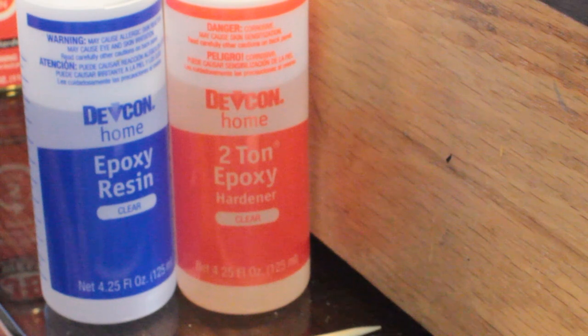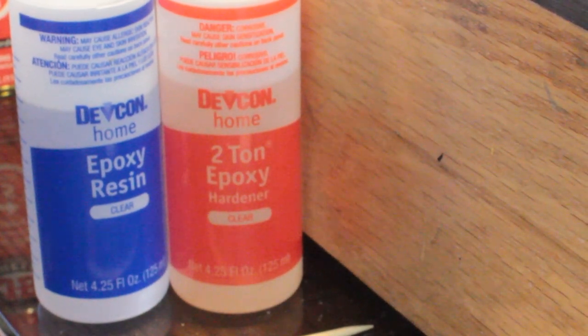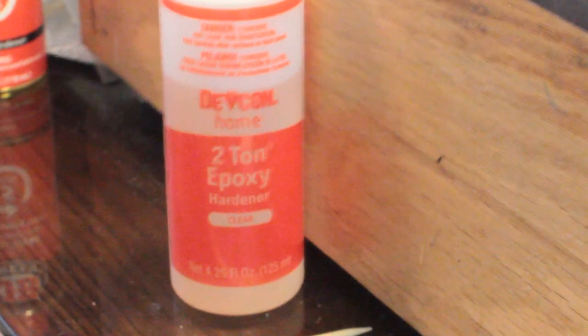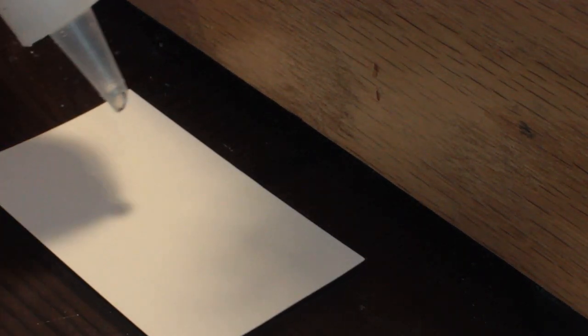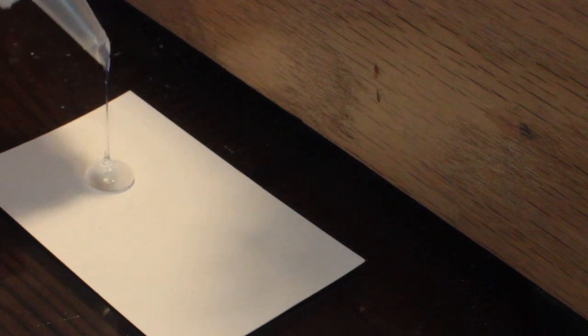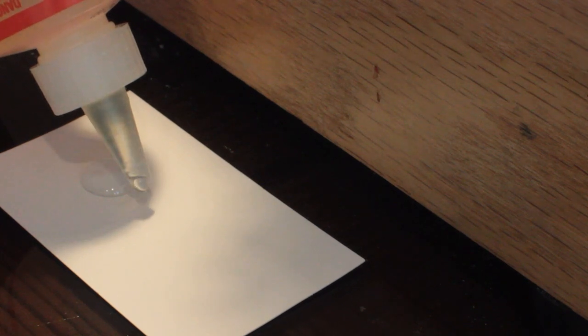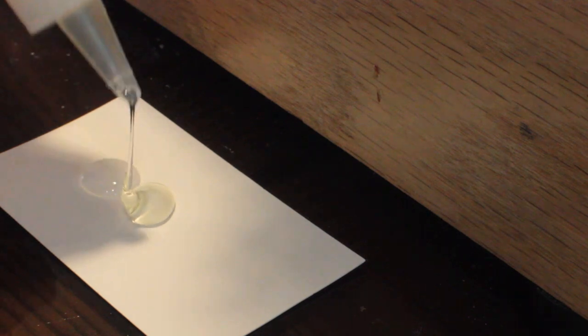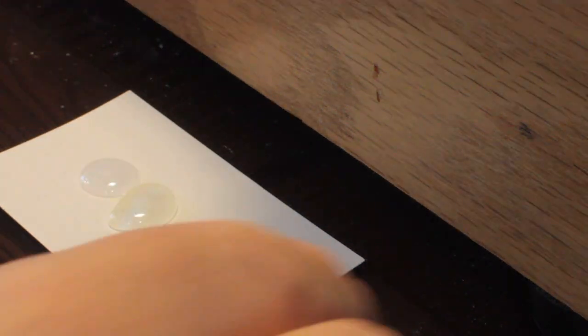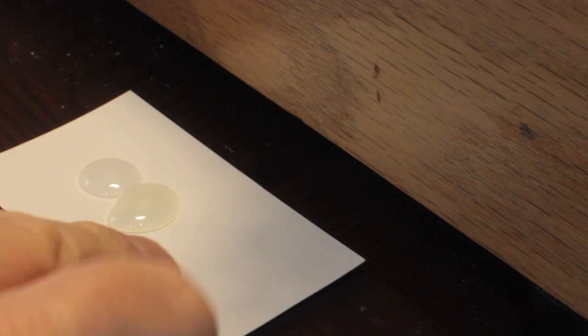The next step is to take the two-part epoxy. I use an old business card because I have a lot of them. You can use anything. Some people use a credit card, a lid, anything you want. And you just want to put out a 50-50 mix. Just eyeball it and get it pretty much right. If you put too much down, you can scrape a little bit off before you start mixing it. But when you've got two puddles that look about the same, you've got a 50-50 mix.